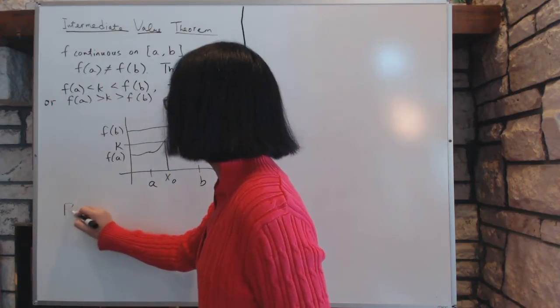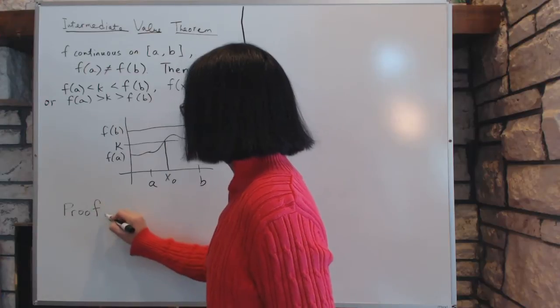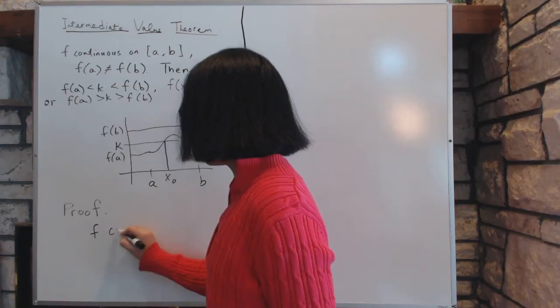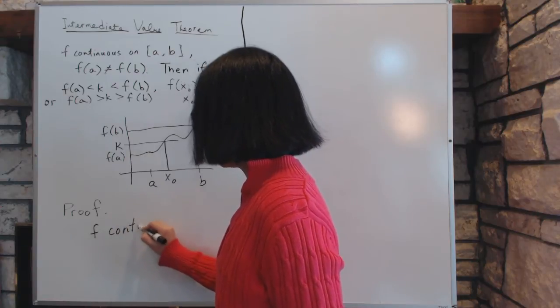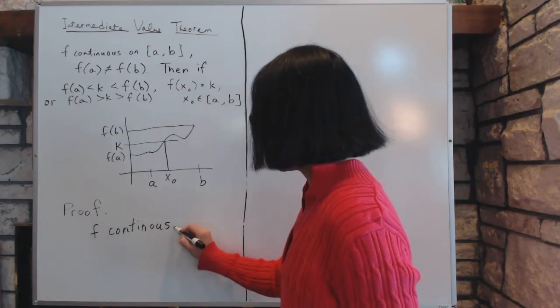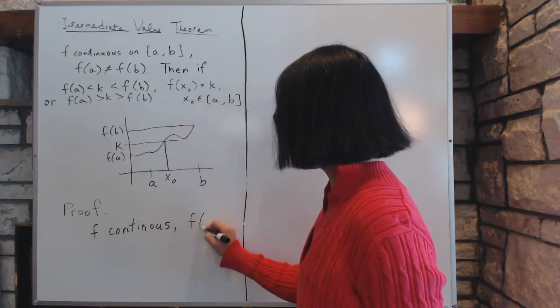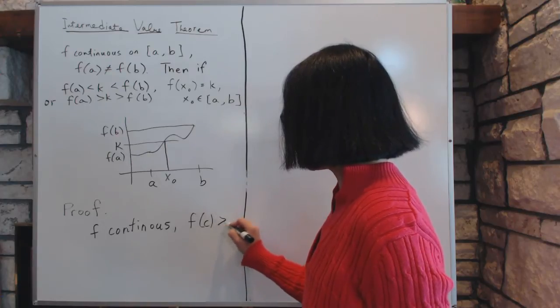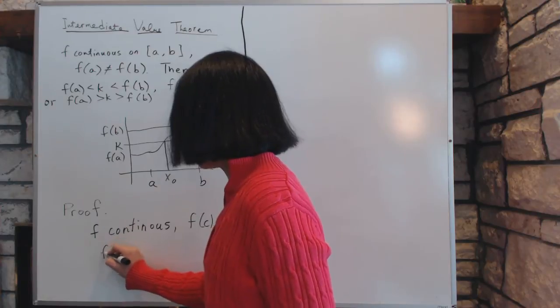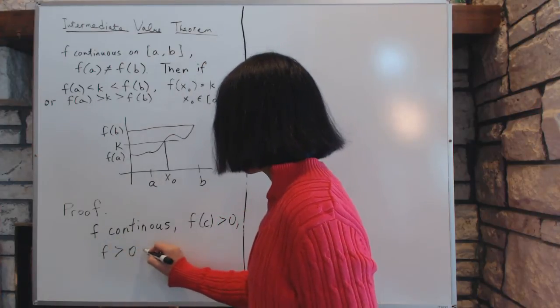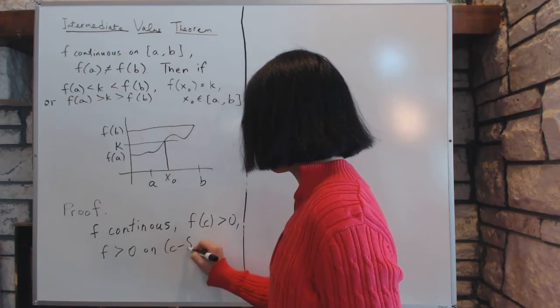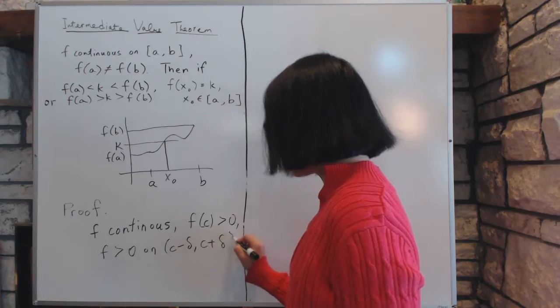Which says that if a function f is continuous on something, if f is continuous, then, and if f of c, a certain point c, is bigger than 0, let's say, then f is bigger than 0 on a small interval that contains c, such as c minus delta, c plus delta.